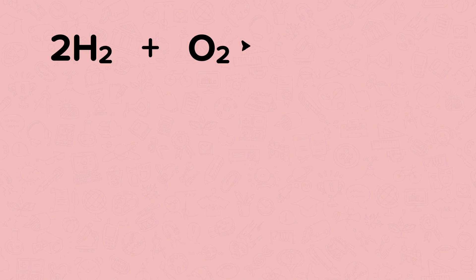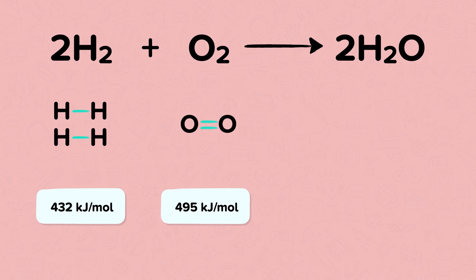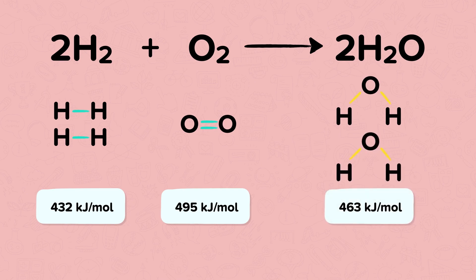In the reaction between hydrogen and oxygen to form water, the bonds in the hydrogen and oxygen molecules will be broken in order to form OH bonds in the two water molecules. We need to supply 2 times 432 kilojoules per mole of energy to break one mole of these hydrogen bonds, and 495 kilojoules per mole of energy to break the double bond in the oxygen molecule. Each water molecule has two OH bonds and there are two molecules of water, so 4 times 463 kilojoules will be released when the two water molecules are formed.